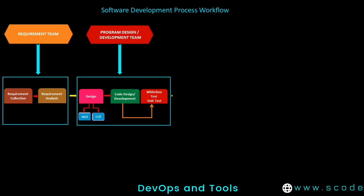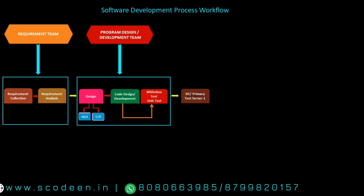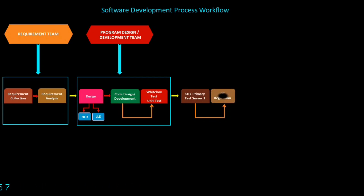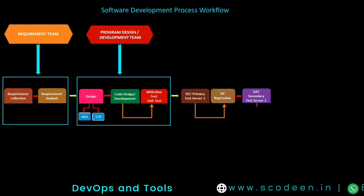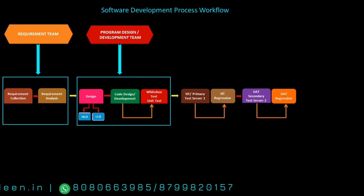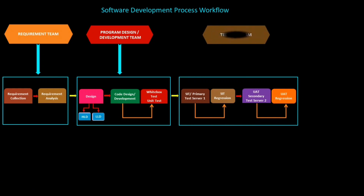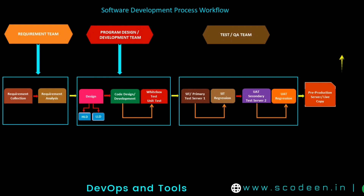This comes under the development team. Next is the testing team, which has two major servers: one is the primary server known as SIT, which also has a subcomponent called SIT Regression. The secondary server is known as UAT (User Acceptance Test), and it also has a subcomponent called EOT Regression.